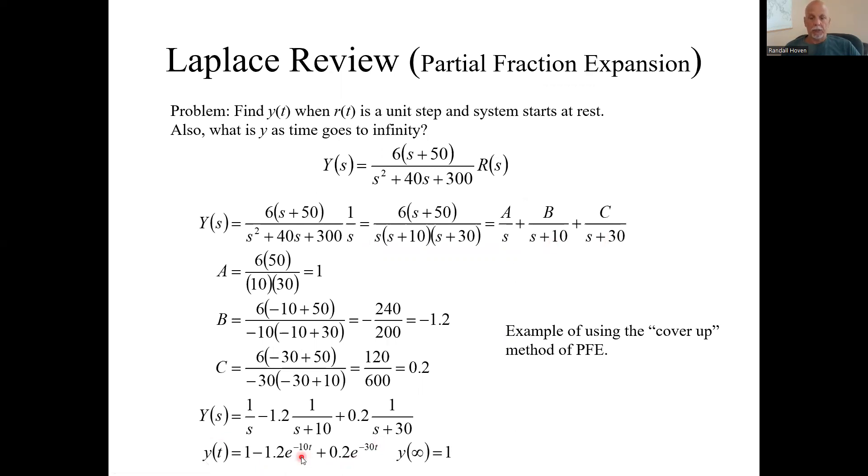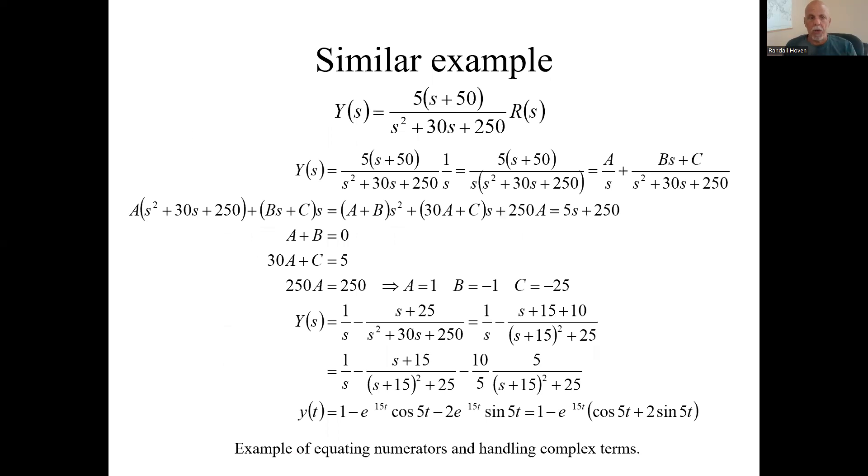And if you take the limit as t goes to infinity, these two guys go to zero and you're just left with one. So that's the case of the cover up method.